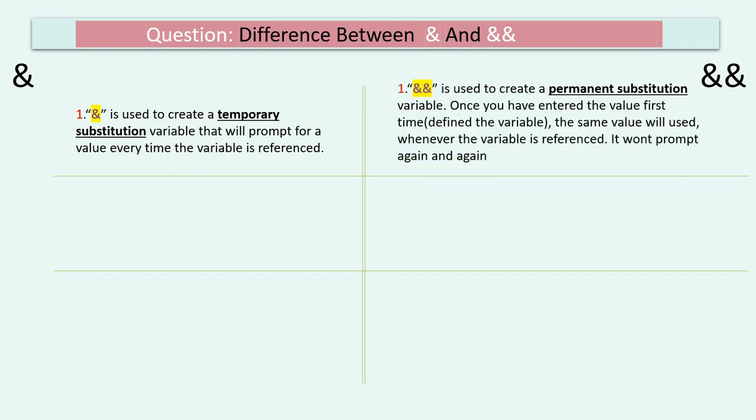The double ampersand (&&) is used to create a permanent substitution variable. It will prompt only the first time it is referenced, and the same value given as input will be used for subsequent executions until we explicitly undefine that variable.